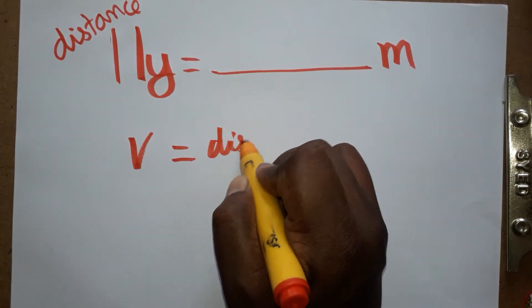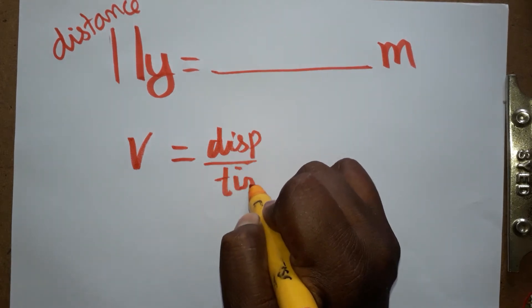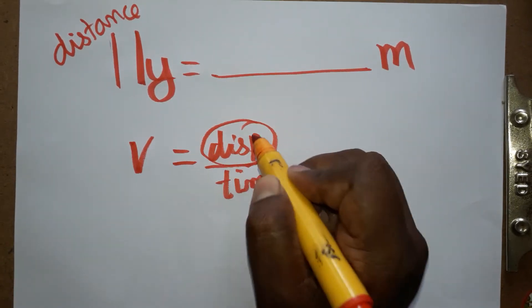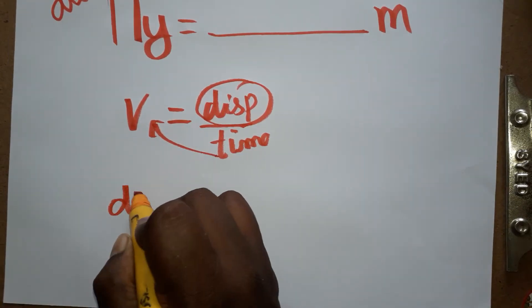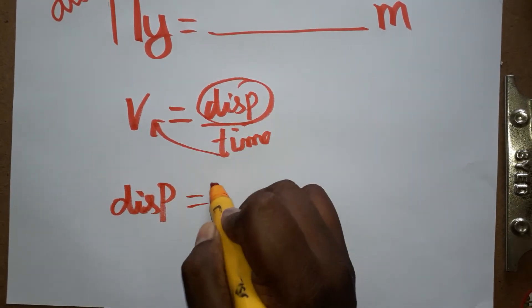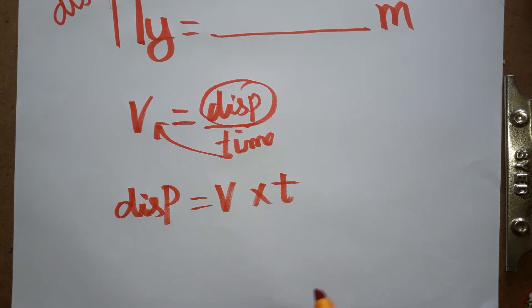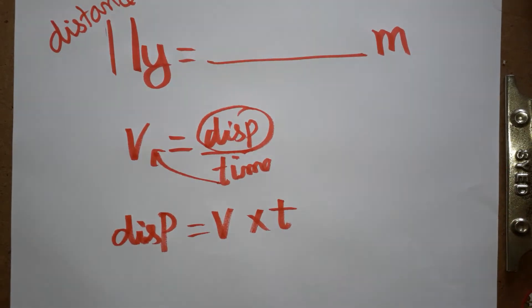We know velocity equals displacement by time. Rearranging this formula, displacement equals velocity times time. For light year, the time is one year and the velocity is the speed of light.